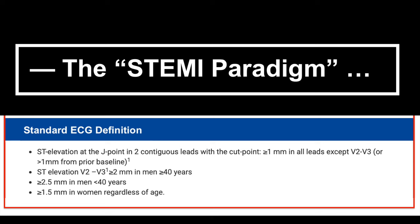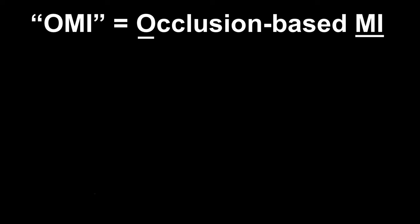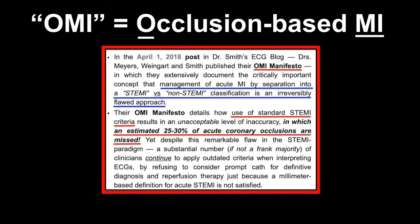This is based on the STEMI paradigm, which is an old and fully outdated paradigm in 2023, but still widely used. I still see many cardiologists worldwide stuck in the STEMI paradigm. Using millimeter-based STEMI criteria, you will miss at least 25% to 30% of acute coronary occlusions.